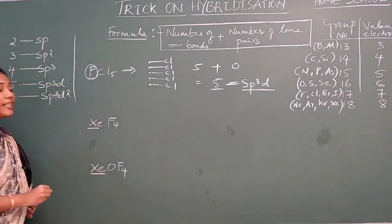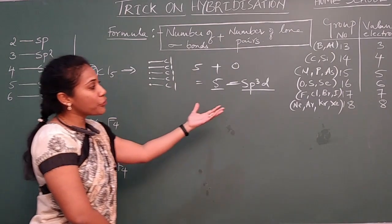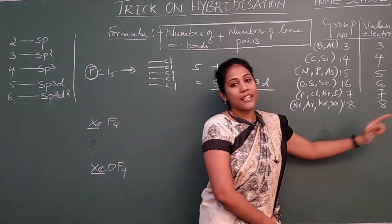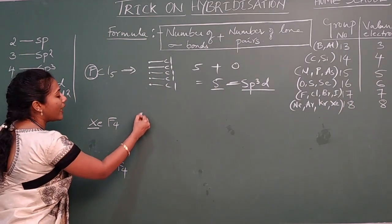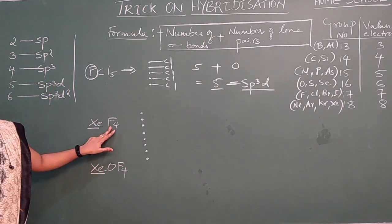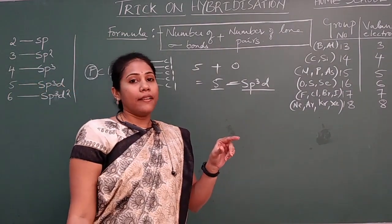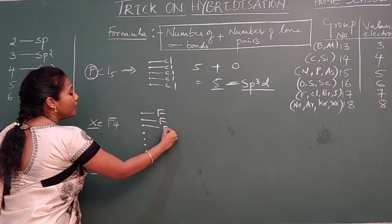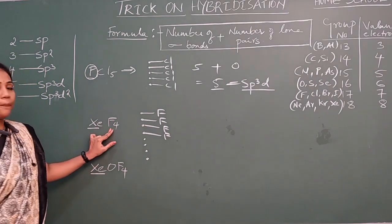Now let us try XeF4. Xenon belongs to group 18, so it has 8 valence electrons — put 8 dots. There are 4 fluorines, and each fluorine makes 1 sigma bond, taking up 1 electron. So 4 electrons are used by the 4 fluorines, giving 4 sigma bonds.